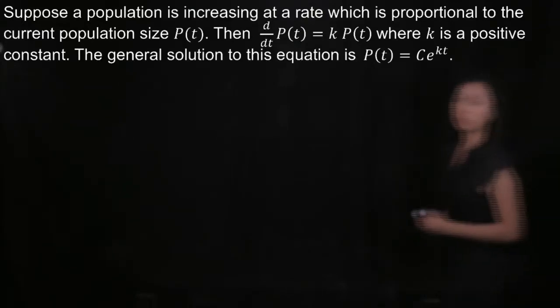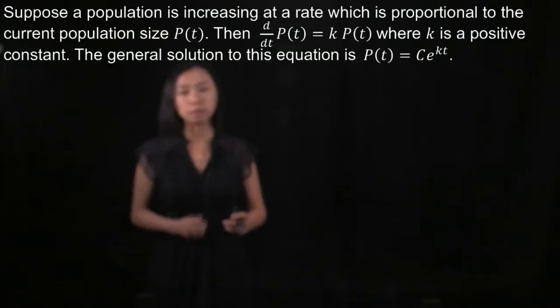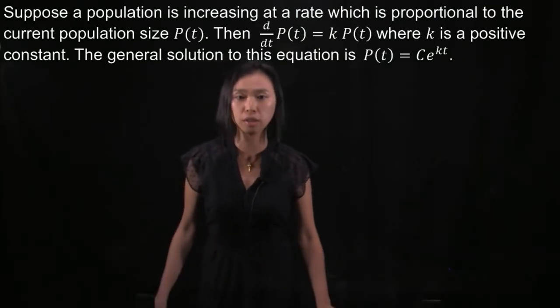Suppose a population is increasing at a rate which is proportional to the current population size P. Then dP/dt is equal to k multiplied by P, where k is a positive constant. This is the law of natural growth.